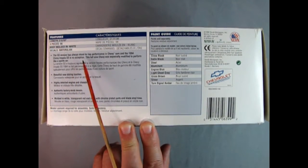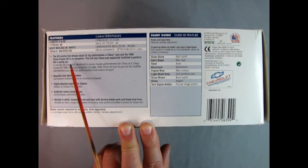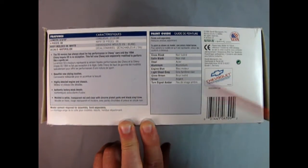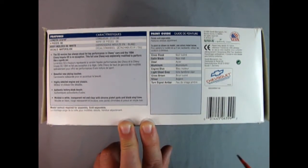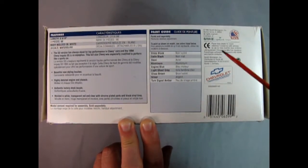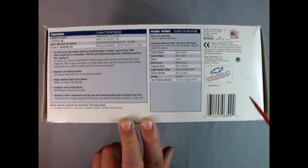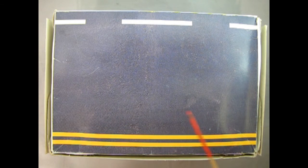It says the SS version has always stood for top performance in Chevy cars and the 1994 Chevy Impala SS is no exception. This full-size Chevy was especially modified to perform like a sports car. Interesting because this is made in '98 and inside it was talking about the '96. So what year is this thing exactly? Probably a '94. Anyway, there's the paint guide as well and all the rest. So again really wonderful from Monogram. Printed on the bottom of the box is this wonderful highway with the dual yellow lines and the broken white lines. Again a wonderful place to display your built model.